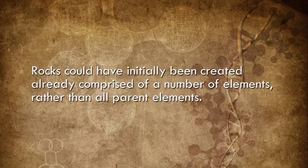Another factor that the bulk of the scientific community wouldn't even consider is that rocks could have initially been created already comprised of a number of elements, rather than all parent elements. If so, many things would have immediately had the appearance of age the moment they were created. But why would God create something with the appearance of age that isn't actually old? That would be deceptive, wouldn't it? Well, only if you assume that God's motive would have been to create something that looked old solely for the purpose of giving it the appearance of age. Every aspect of God's creation serves a purpose in the greater workings of the earth, including daughter elements. God might have created daughter elements directly, since they were and are an important part of life on earth — not for the purpose of deceiving us, but because of their inherent usefulness.